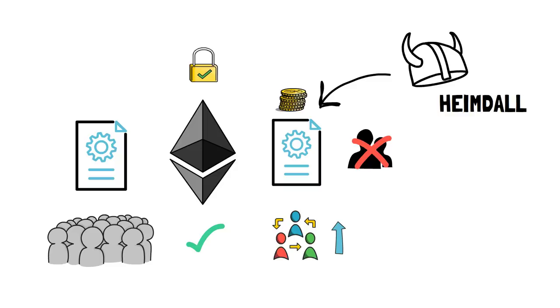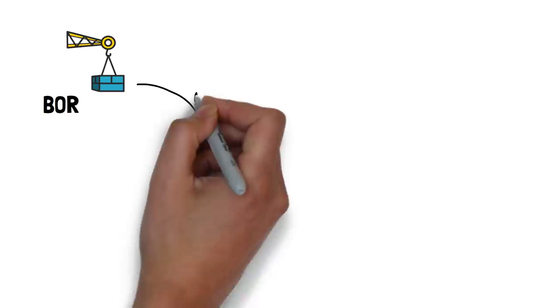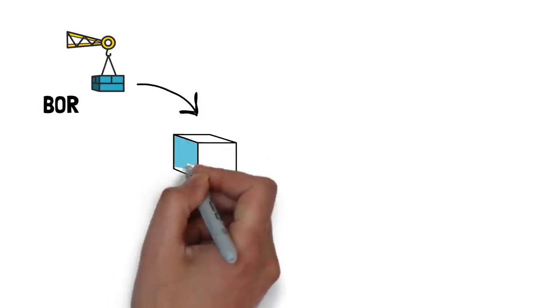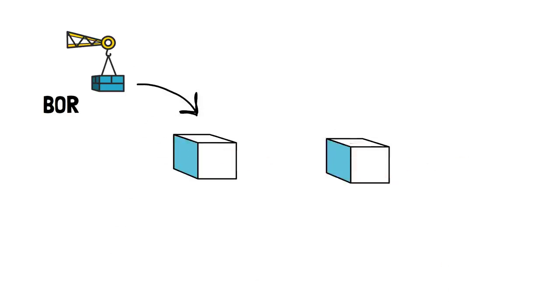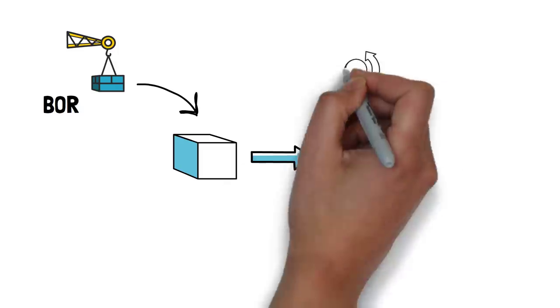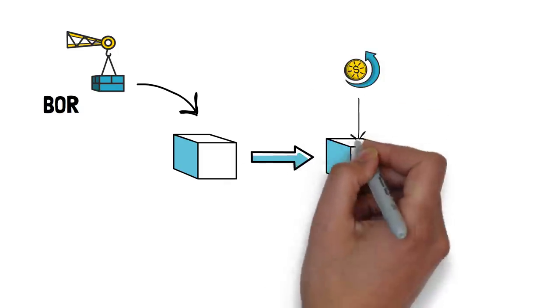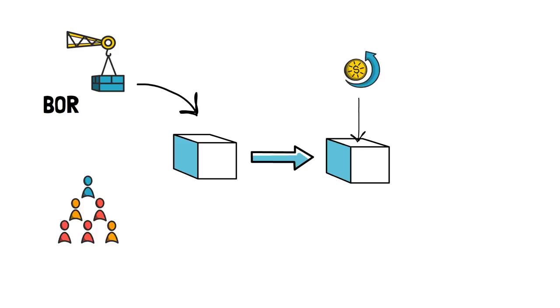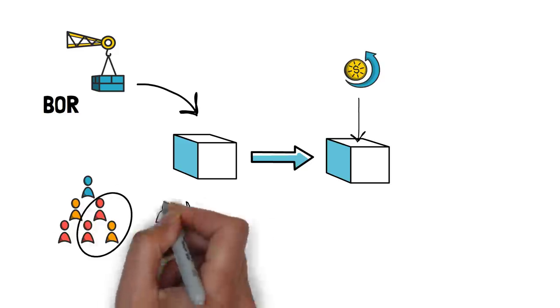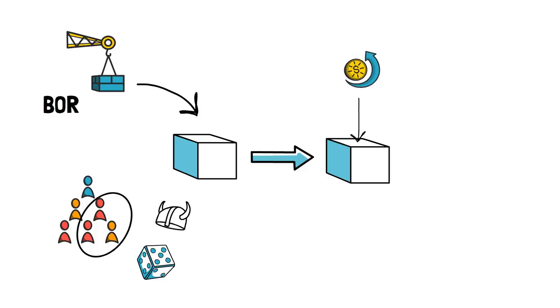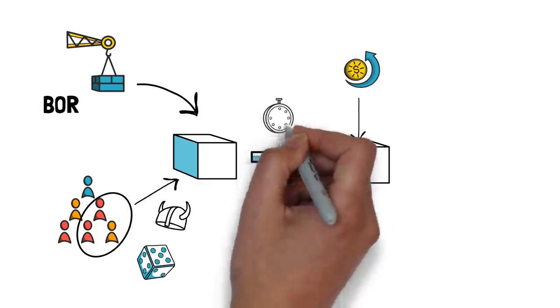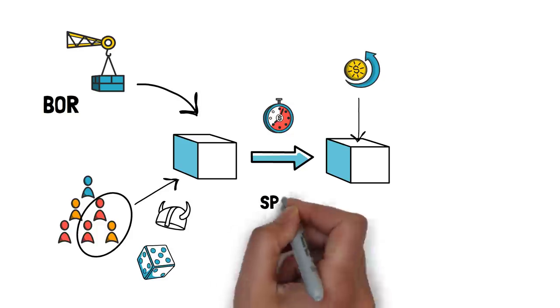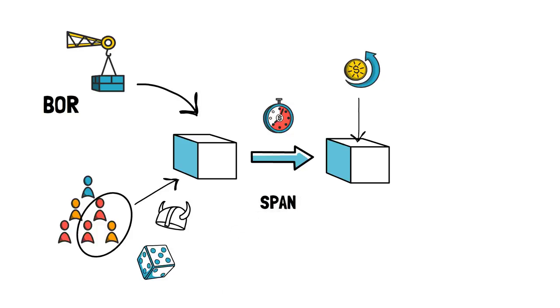Heimdall is also responsible for checkpointing. More on this later in the video. Bohr is the block producer layer of the POS chain architecture that is responsible for aggregating transactions into blocks. Bohr block producers are a subset of the validators that are periodically shuffled by the Heimdall validators. Block producers are selected to validate blocks only for a set number of blocks, also called span. After this time period, the selection process is triggered again.